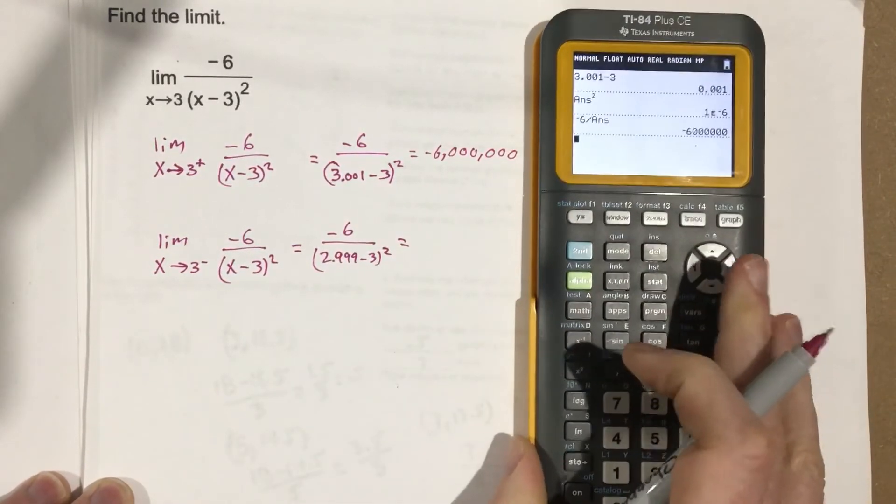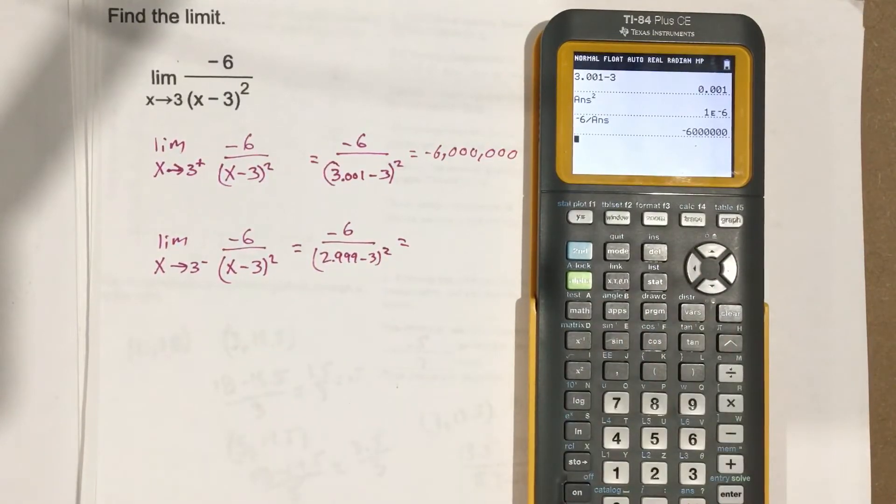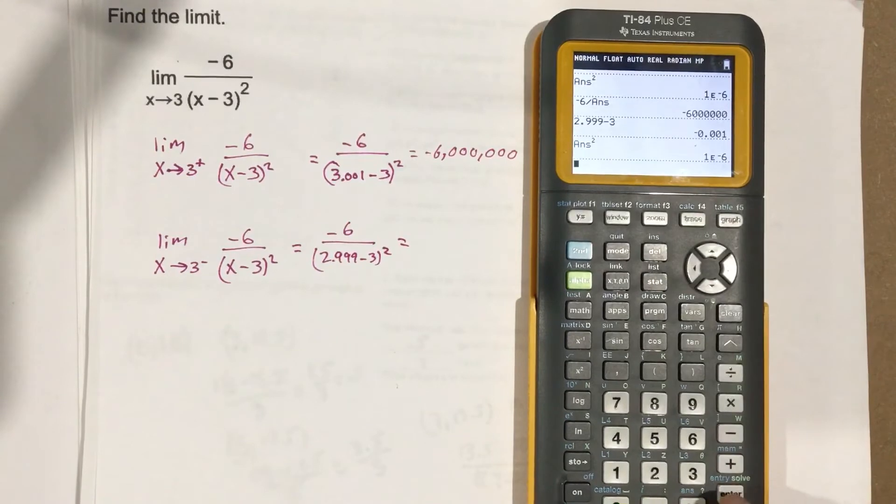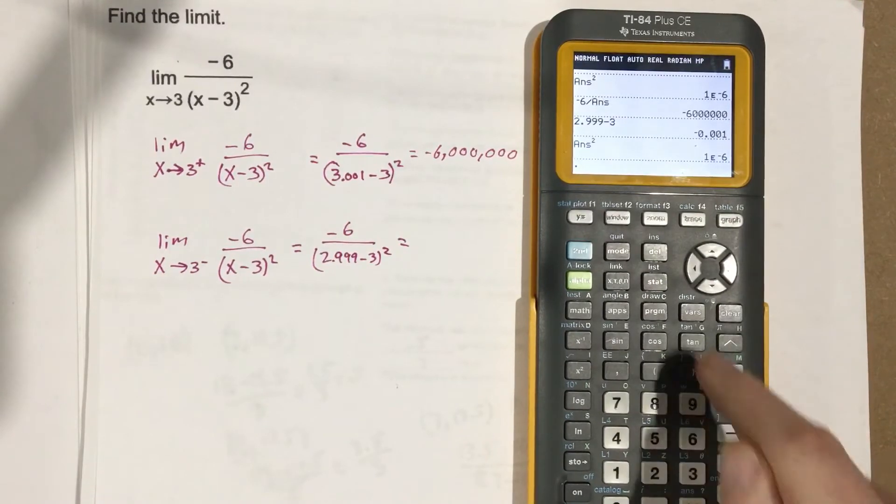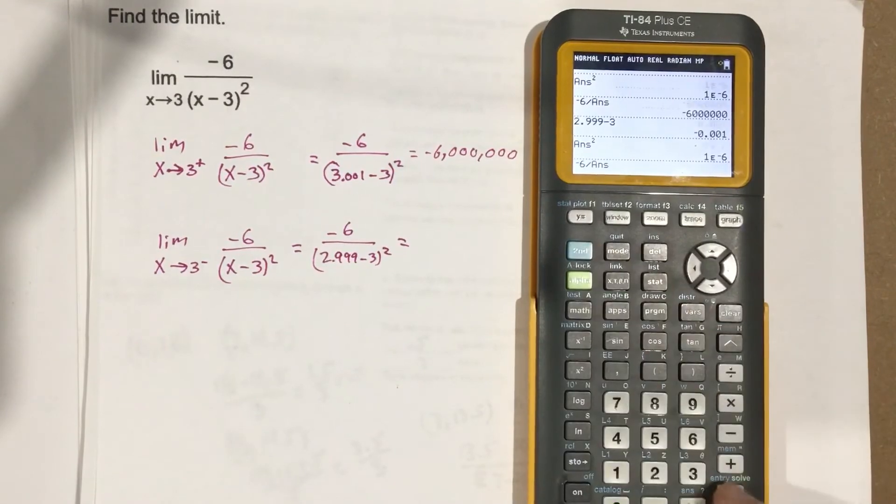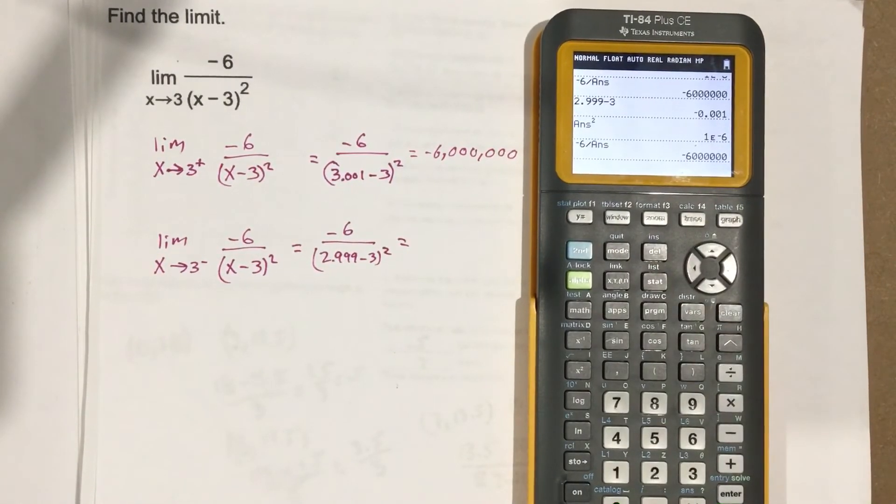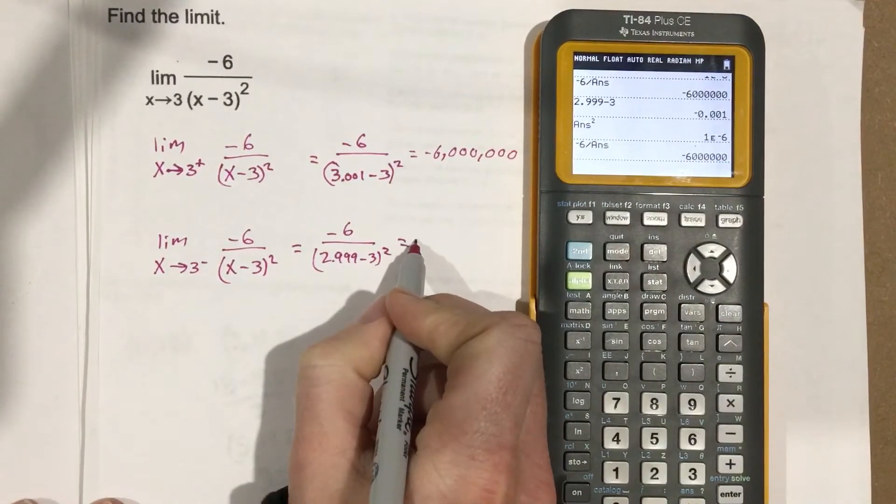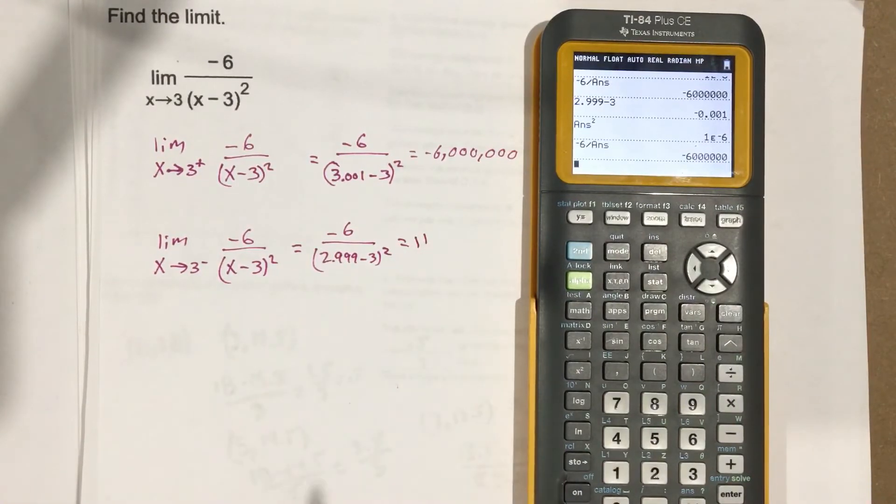Doing the same thing on the left side: 2.999 minus 3, square it, then negative 6 over that. We end up with the same answer—negative 6 million. So they're kind of going the same direction, giving us the same number.